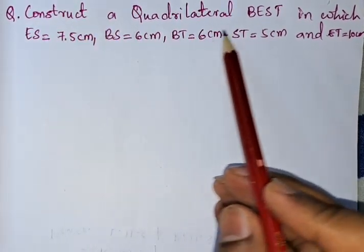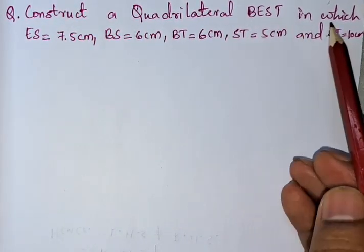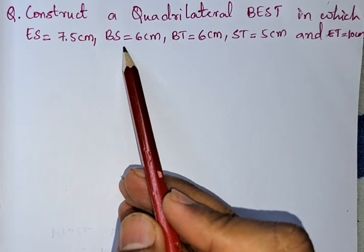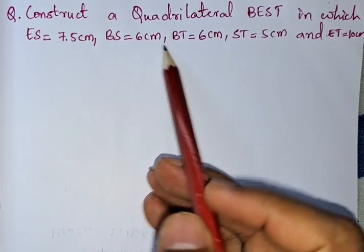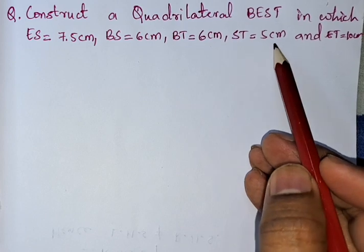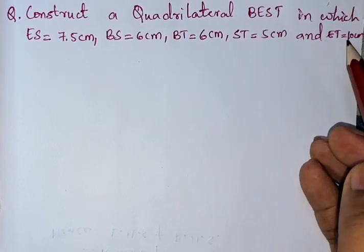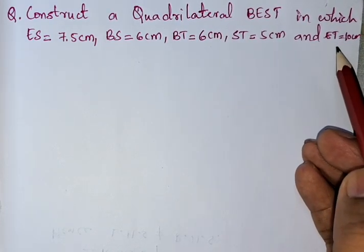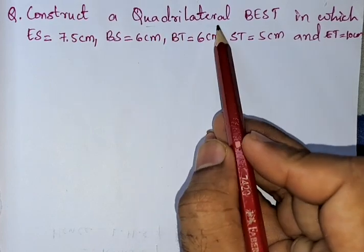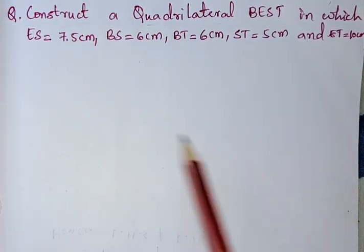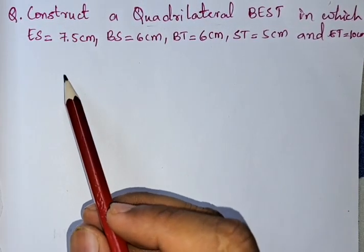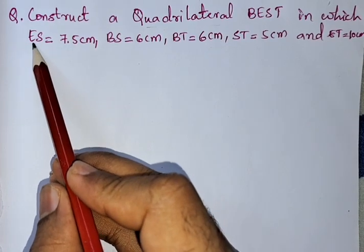Construct a quadrilateral BEST in which ES = 7.5 cm, BS = 6 cm, BT = 6 cm, ST = 5 cm, and ET = 10 cm. A quadrilateral is a figure having four sides, so we need to construct it with the given measurements.